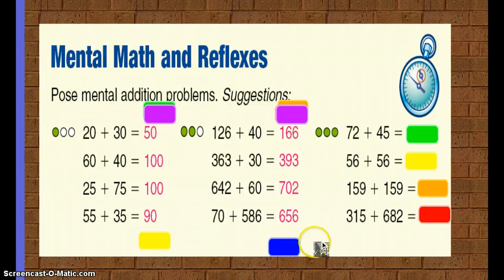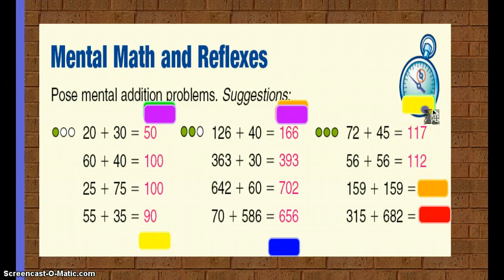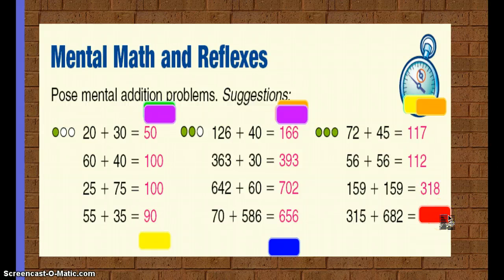Hopefully you're keeping up with me and beating me. 72 plus 45 equals 117. 56 plus 56 equals 112. 159 plus 159 equals 318. And 315 plus 682 equals 997.